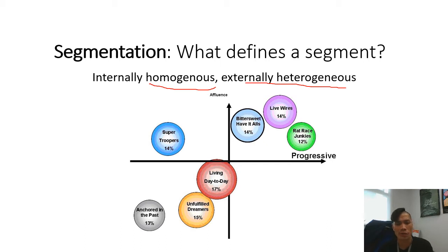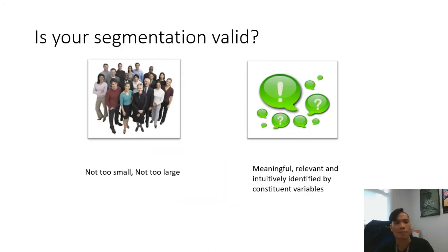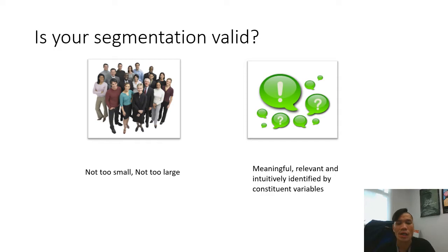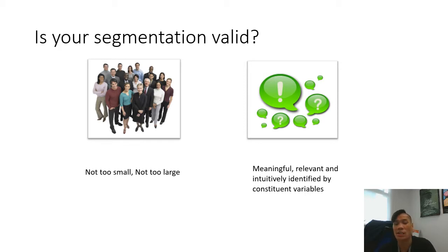If you were to place it onto a 2x2 graph, you will see that each segment has its own characteristics which define it away from other segments. The most important question is whether your segmentation is valid. There is no hard and fast rule because it depends on the size of the segment and whether it is meaningful, relevant, or intuitively identified by constituent variables — ranging from demographic to behavioral variables.